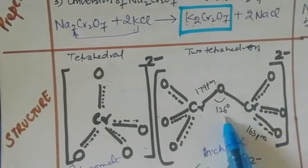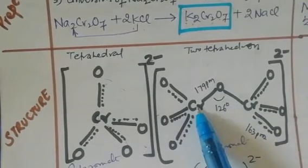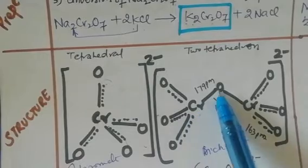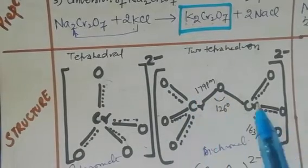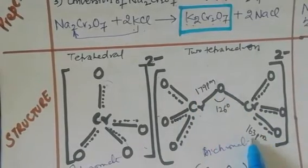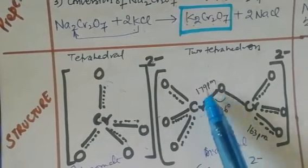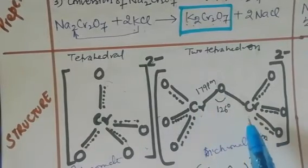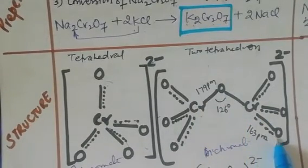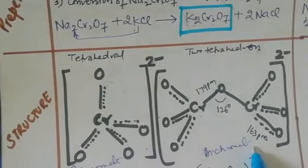The bond length between chromium and the terminal oxygen is 163 pm, while the internal chromium-oxygen bond is 179 pm. The bond order reflects the partial double bond character in the dichromate ion.